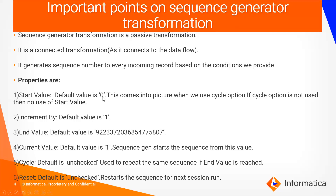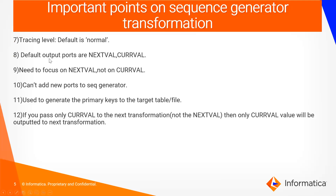Key properties summary: Start Value defaults to 0 and only matters when Cycle is enabled. Increment By defaults to 1 but can be any value. End Value is the maximum configured value. Current Value defaults to 1 — the sequence starts from this value. Cycle is unchecked by default and repeats the sequence when end value is reached. Reset is unchecked by default and restarts the sequence at current value each session. Tracing Level defaults to Normal. Default output ports are NEXTVAL and CURRVAL — always use NEXTVAL. You cannot add new ports to the Sequence Generator. Use it to generate primary or foreign key values for target tables or files.